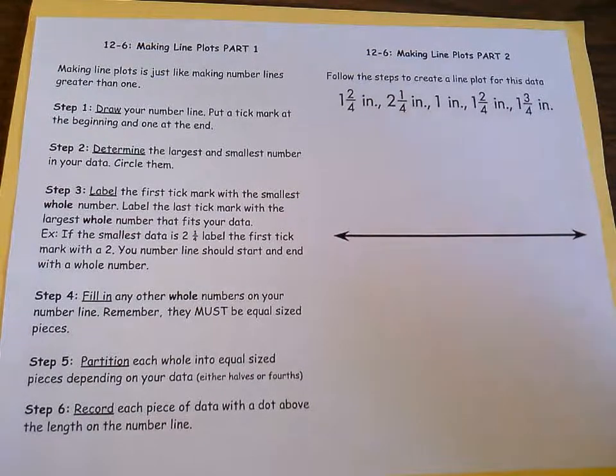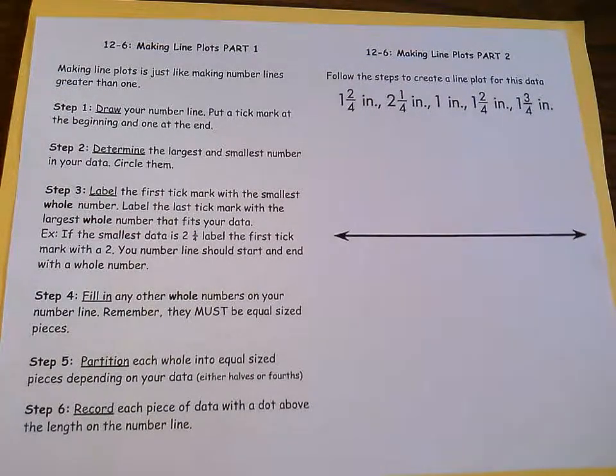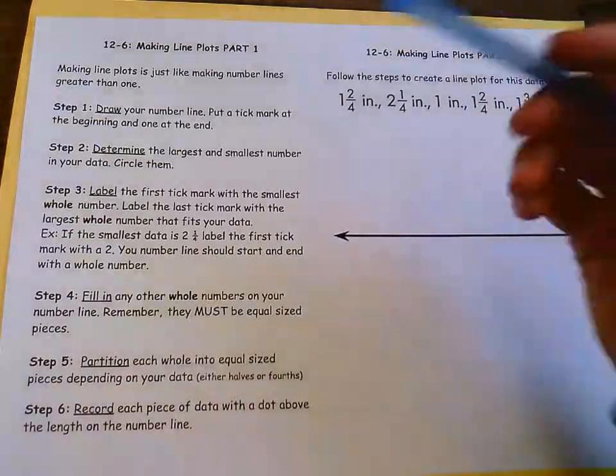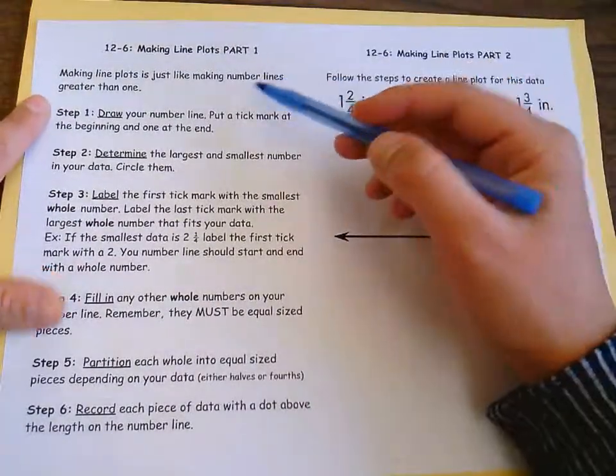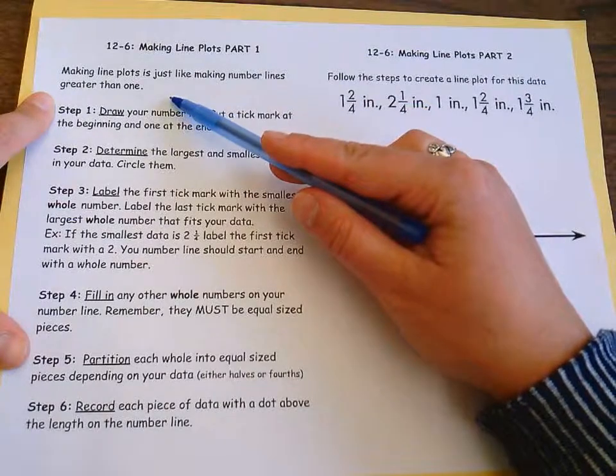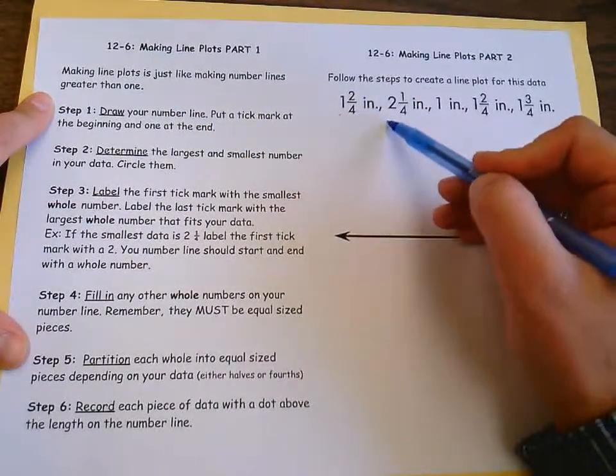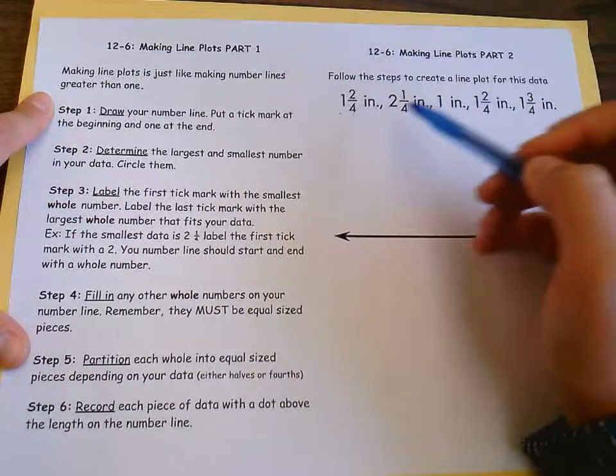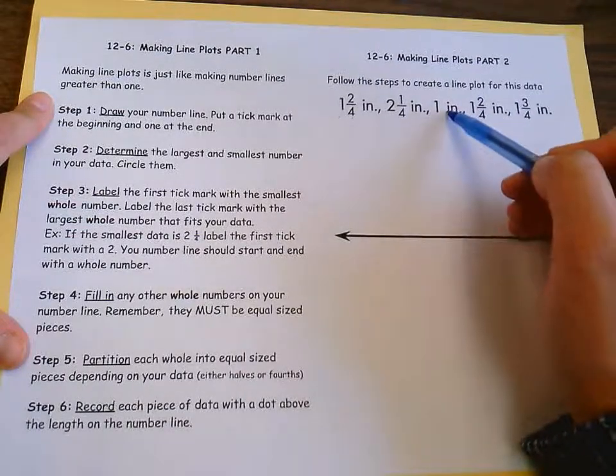Then we can even make some inferences or answer some questions using that data. So in order to make a line plot, it's just like making a number line, and oftentimes it's going to be greater than one. Looking at my data here, I see I have whole numbers and fractions, so it's going to be numbers that look like one is my smallest.